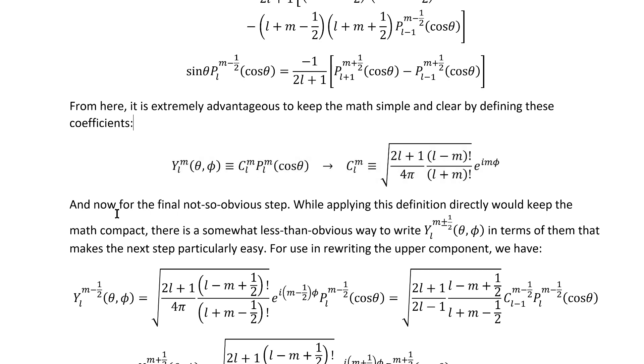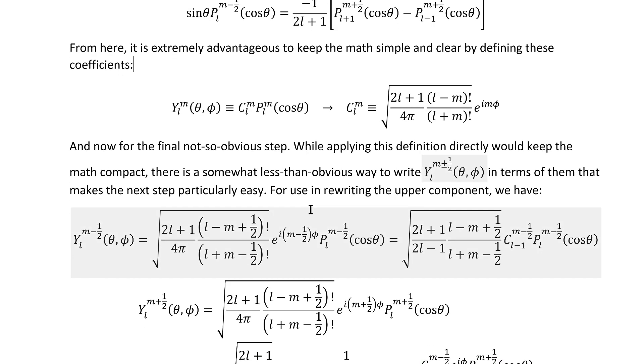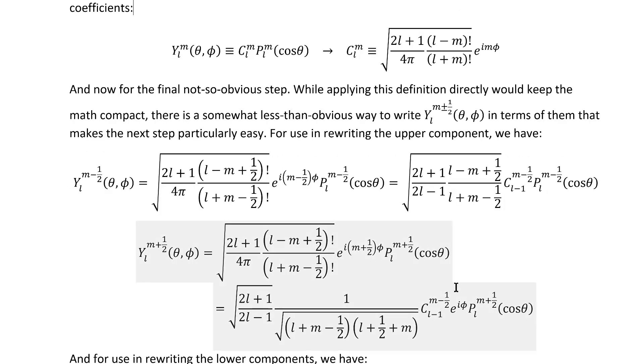And now for the final, not-so-obvious step. While applying this coefficient definition directly would keep the math compact, there's a somewhat less-than-obvious way to rewrite the spherical harmonics that we need in terms of them that makes the next step particularly easy. For use in rewriting the upper component, these two formulas here end up being extremely useful, by which I mean the ones on the end here, after the last equals sign.